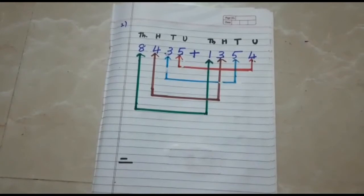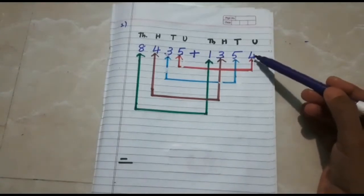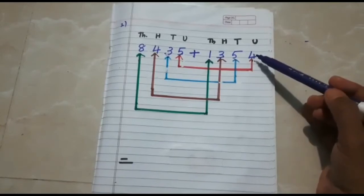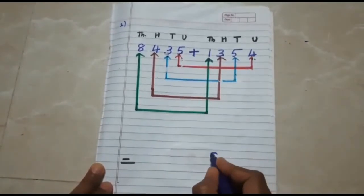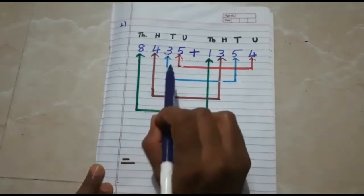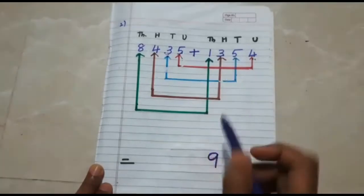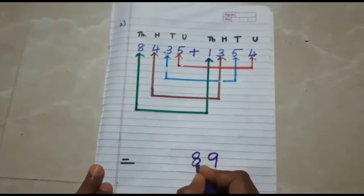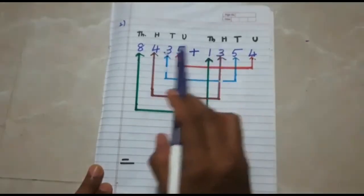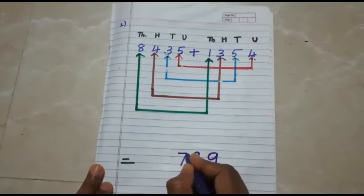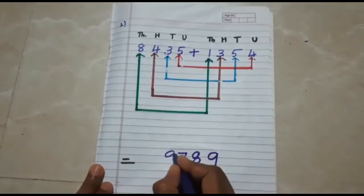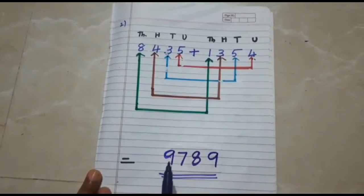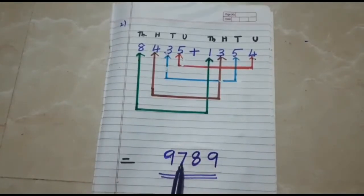As I told you in the previous sum, we always start from the units place. Units: 5 plus 4 is 9. Then tens: 3 plus 5 is 8. Then hundreds: 4 plus 3 is 7. Finally thousands: 8 plus 1 is 9. So we get the answer as 9,789.